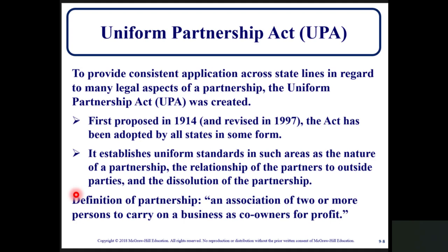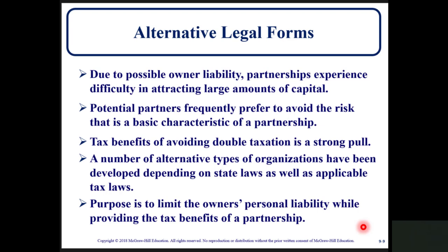The Uniform Partnership Act, or UPA: to provide consistent application across state lines regarding many legal aspects of a partnership, the Uniform Partnership Act was created. First proposed in 1914, the act has been adopted by all states in some form. It established uniform standards in areas such as the nature of partnerships, the relationship of partners to outside parties, and the dissolution of partnerships. The definition of a partnership is an association of two or more persons to carry on a business as co-owners for profit. This act helps bring consistency to the treatment of partnerships across the United States.